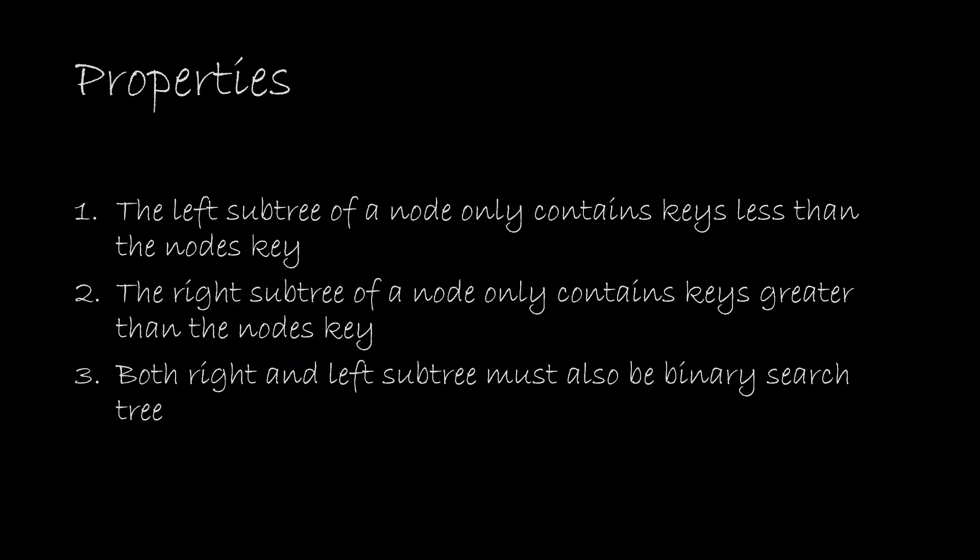Here are the properties of binary search tree. The left subtree of a node only contains keys less than the node key. The right subtree of a node only contains keys greater than the node key. Both right and left subtree must also be binary search trees.